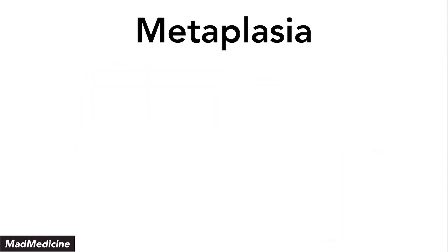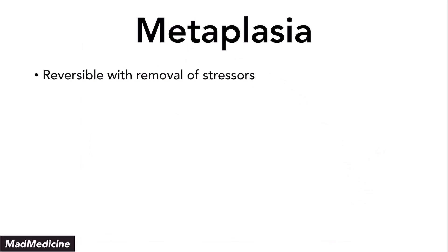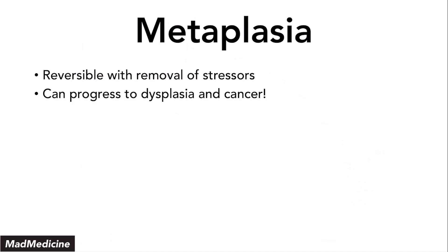When it comes to metaplasia, one thing you need to remember is that for the most part metaplasia is reversible if you remove the stressor. If you treat the GERD properly and get it under control, Barrett's esophagus will go away and it won't progress to cancer. But if you do not get rid of that stress change, it can progress to dysplasia and even cancer. That's why metaplasia is so dangerous — it has the potential to cause death long term.